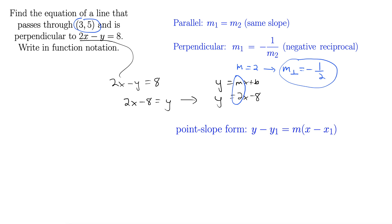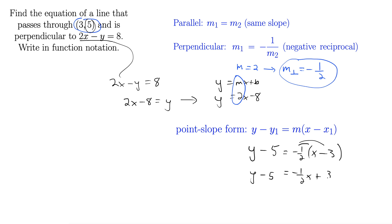y minus y₁ equals m times (x minus x₁). So let's plug everything in. We have y minus y₁ — well, y₁ is 5 — equals m, which we decided was negative 1 half, times (x minus x₁), where x₁ is 3. Distribute the negative 1 half through to both terms. That gives us negative 1 half x plus 3 halves. Adding 5 to both sides gives us y equals negative 1 half x plus 3 halves plus 5.